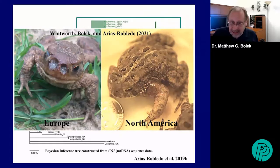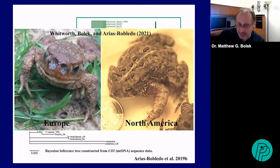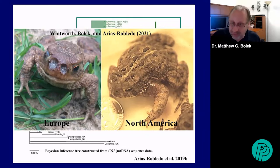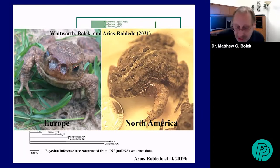Gerardo discovered a process of speciation: we suspect that during evolutionary history there was a fly that infected toads when the continents were together. When they split up, those flies could not fly over the oceans to mate and began to become distinct species, even though morphologically we can't tell them apart. We wrote a paper about this with Whitworth, Bolek, and Aris Robeldo. The types of amphibian hosts they interacted with were very different, so they evolved different infection locations. The only way we could figure this out was by obtaining those museum voucher specimens.